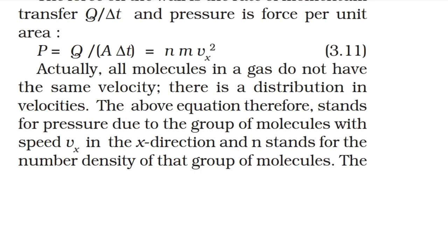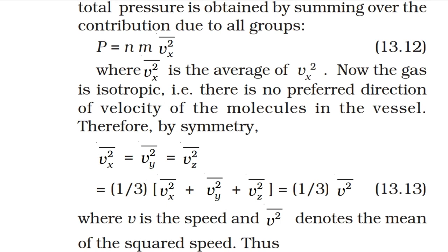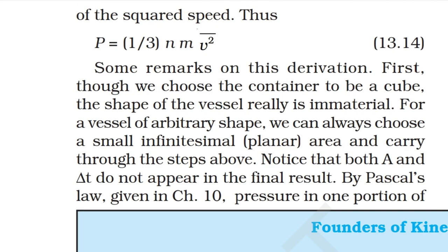Molecules in a gas do not all have the same velocity — there is a distribution in velocities. The above equation stands for the pressure due to a group of molecules with speed vx. The total pressure is obtained by summing over all groups: P = n·m·v̄x². Since the gas is isotropic — no preferred direction — by symmetry: v̄x² = v̄y² = v̄z² = (1/3)·v̄². Thus P = (1/3)·n·m·v̄².